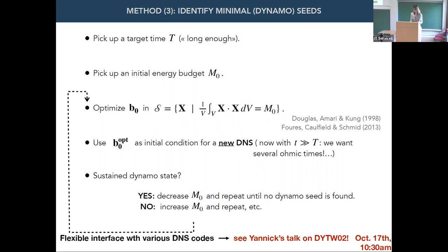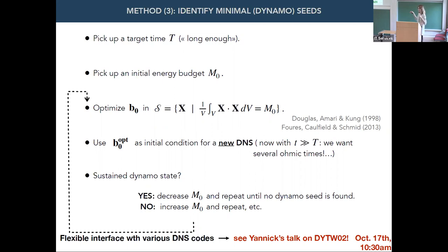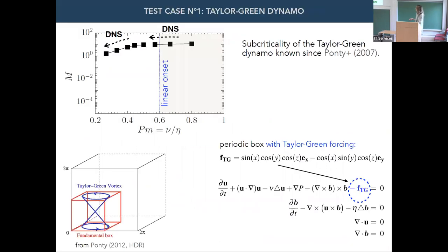We wanted to do this in various geometries using various DNS codes, and also be flexible in changing the optimization algorithm. With Yannick, we are progressively building a flexible interface where you can plug in your favorite DNS code — we'll probably be talking about that in the second workshop in Leeds. To test the method, the first thing we did was look at a flow where we knew we would not be searching for something that doesn't exist — and that flow is the Taylor-Green flow: a 2D-3-component flow in a triply periodic box.